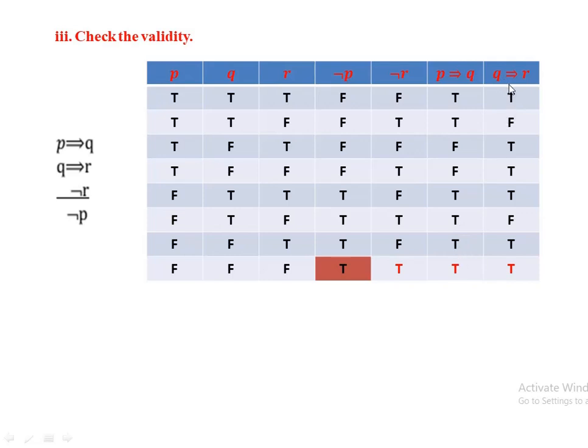Similarly, Q implies R has truth values: true, false, true, true, true, false, true, true across the eight rows.